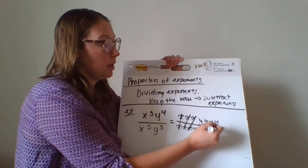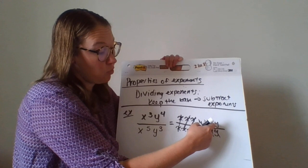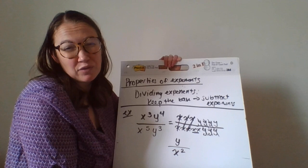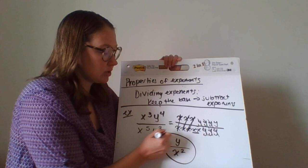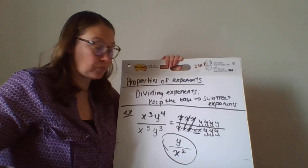Over here, I have 1, 1, and 1. If you notice, I have no y's left on the bottom, but I do have one left up here on the top. So that's going to be y. And it's technically y to the first, but we don't ever write the first power. That just means itself. So my answer here is going to be y over x to the second power.